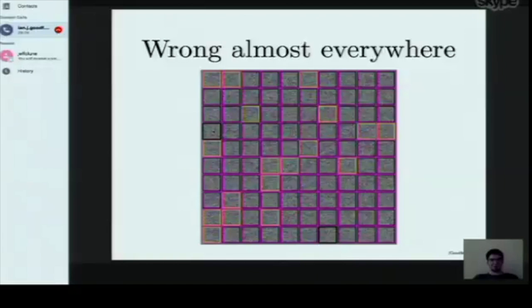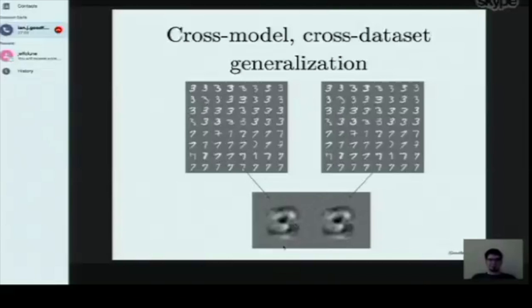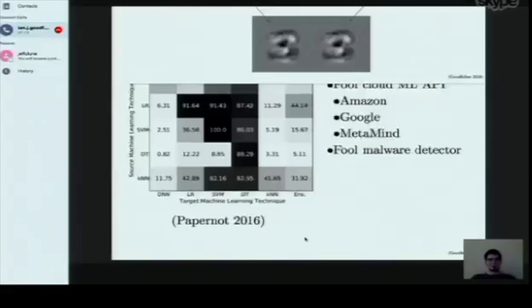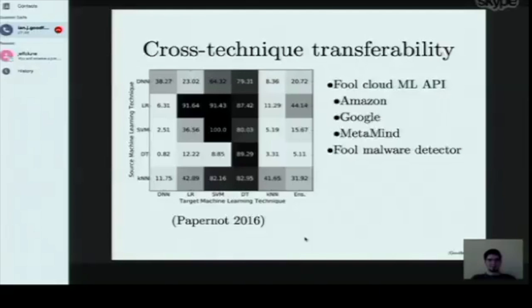Adversarial examples tend to generalize across different models. Because different machine learning models trained on the same task need to generalize similarly, they learn more or less the same linear functions. Here I show the weights of two logistic regression classifiers trained on different subsets of data — they learn more or less the same weights, making them vulnerable to the same adversarial examples. This makes it possible for an attacker to thwart your model without direct access to it — they just need to query your model and observe its outputs to train a copy.